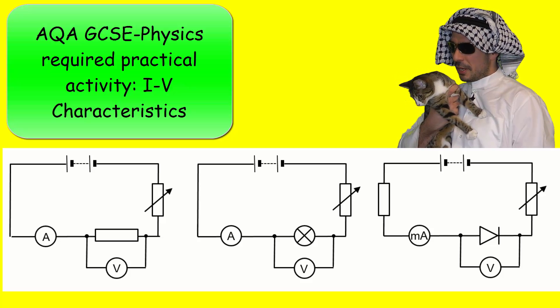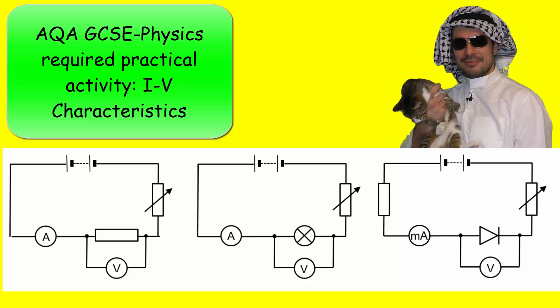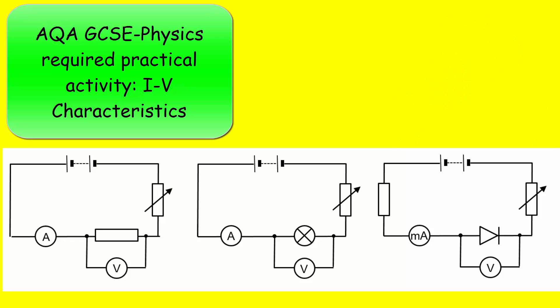Hello and welcome to a video tutorial explaining the IV characteristics practicals for the AQA GCSE physics. We've got three experiments for you today: the IV characteristics of a resistor, a bulb, and a diode. I'm going to start with the resistor.